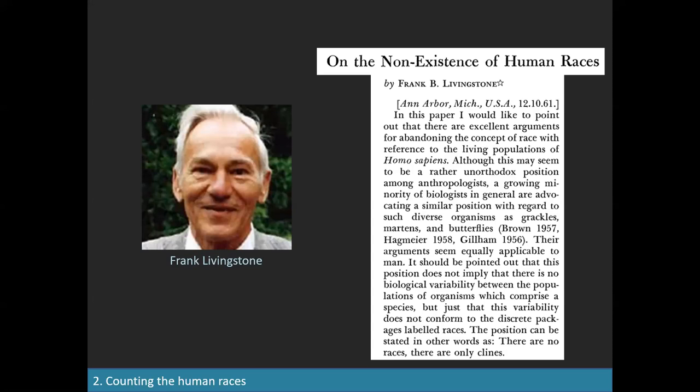Denying the existence of human races does not mean we are all equal — we are not. We are simply not subdivided into distinct packages. There is no package saying 'here you will find someone who is 25% Samsung, 3% LG, and 29% Nokia.' Livingstone's position can be stated as: there are no races in humans, there are only clines — meaning gradients.